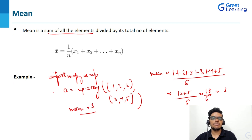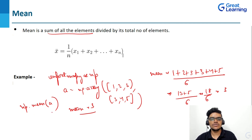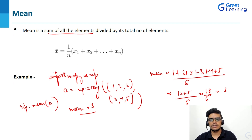Using NumPy I just write np.mean(a) to calculate the mean directly. This is the mean function we can use in Python programming. That's the basic idea about mean.